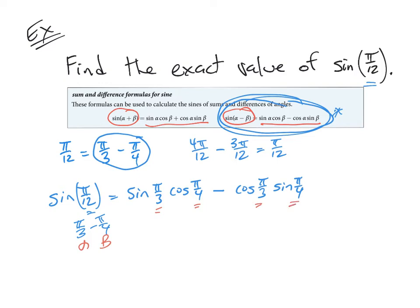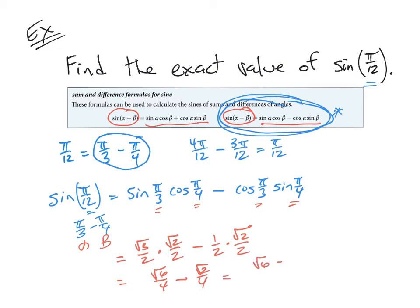Now I need my unit circle knowledge to finish this problem. The sine of pi over 3 is root 3 over 2, and cosine of pi over 4 is root 2 over 2. The cosine of pi over 3 is 1 half, and sine of pi over 4 is root 2 over 2. Simplifying, this gives root 6 over 4 minus root 2 over 4, which equals root 6 minus root 2, all over 4. That is the exact value for the sine of pi over 12.